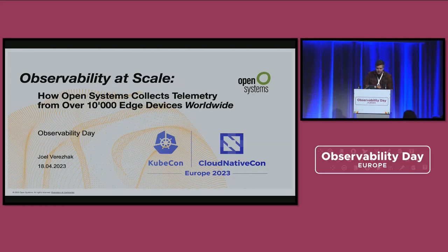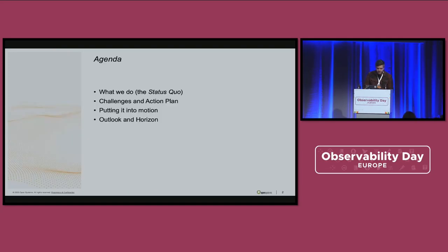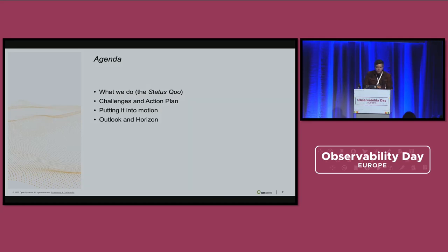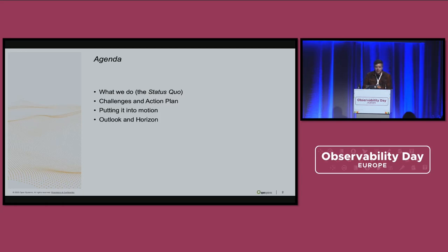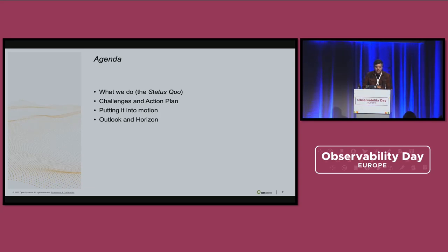There's a lot to get through, so I'm not going to mess around. This is what we are going to talk about — this is the agenda. I'm going to spend a bit of time saying what we do and what we've been doing for the past two decades or so, then outline the challenges which we're now facing, give a brief overview of the action plan, and then give you an update on where we are on the roadmap of putting it into motion.